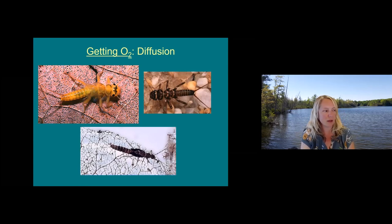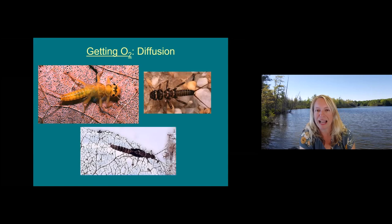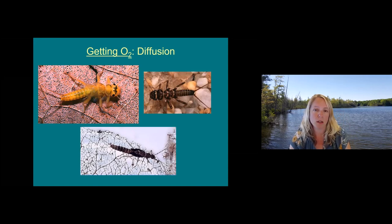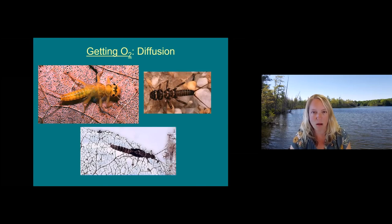A question comes in about distinguishing New Zealand mud snails from other snails you might find. They're tough to identify — they're really small, which helps narrow it down. The speaker admits to never having found one in the field, having been focused on lakes in recent years. There are good resources online, especially through the state of Michigan, and Oakland University has put together a tip card on how to identify them and tell them from other snails. You definitely want to be alert to any small snails you see in the stream, as that could be worth a closer look.